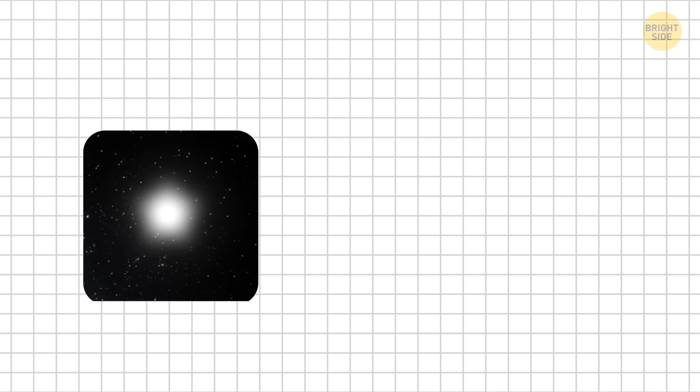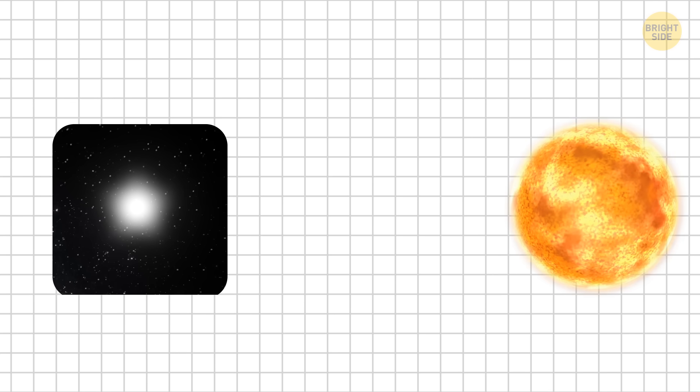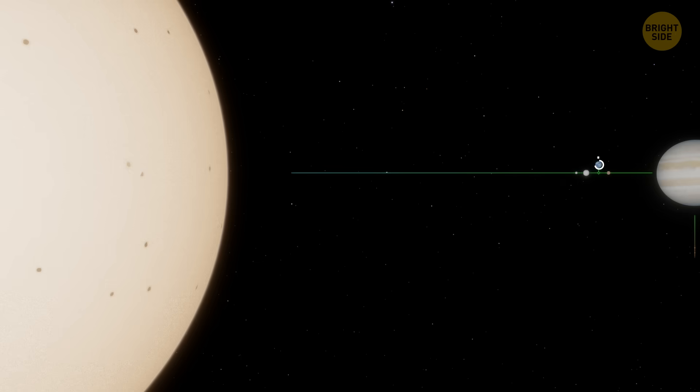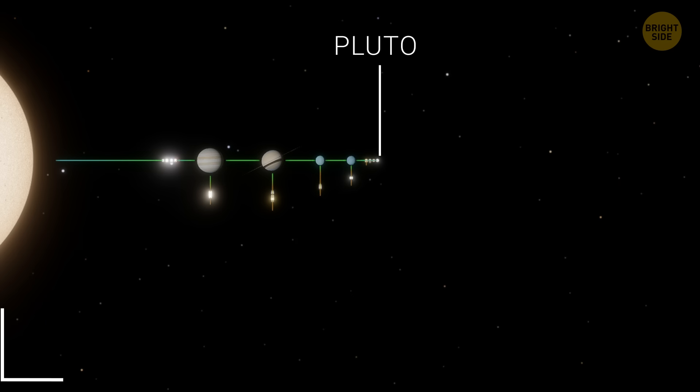To understand such huge distances, scientists often use something called the astronomical unit, or AU. One AU is the distance between Earth and the Sun. For comparison, Pluto orbits between about 30 to 50 AU from the Sun.